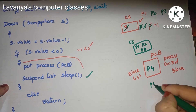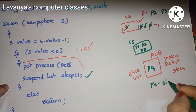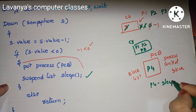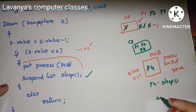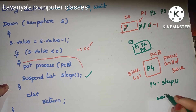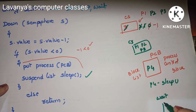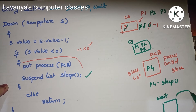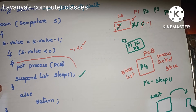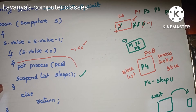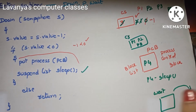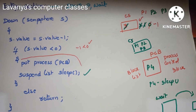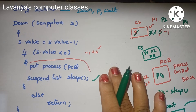P4 is now in the sleep or waiting mode. Whenever it goes to the block list, it cannot directly go into the active state. First it is in the sleep state. This is how the entry section works for the critical section problem.